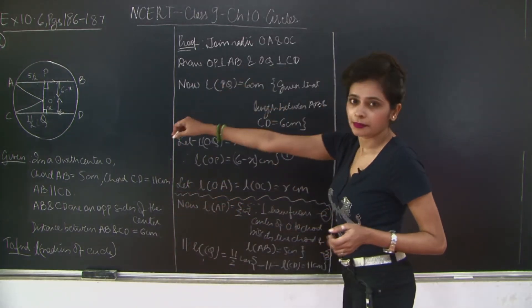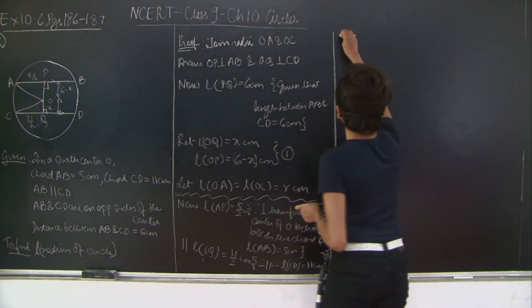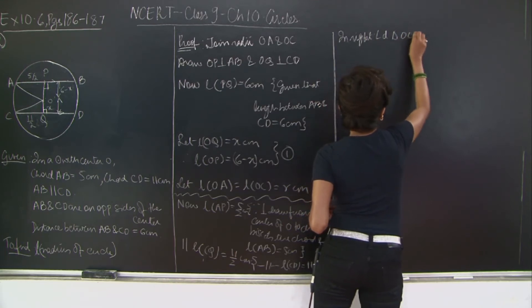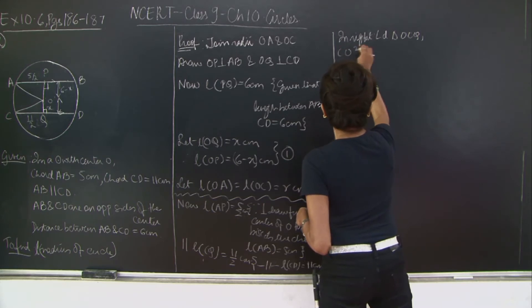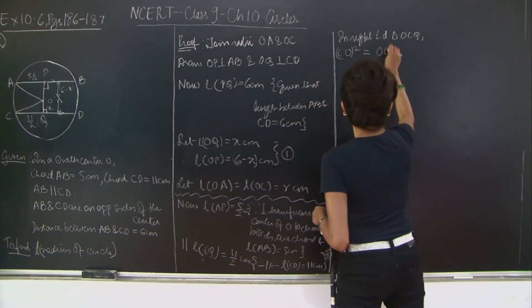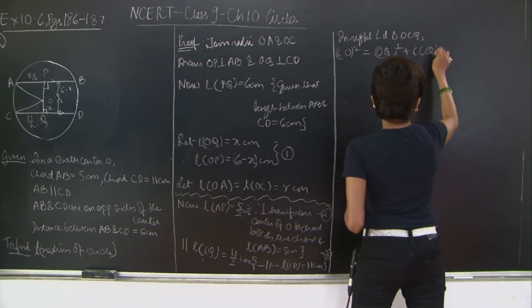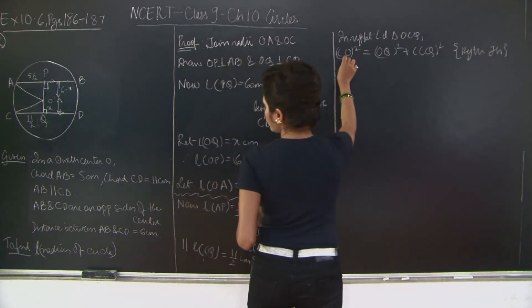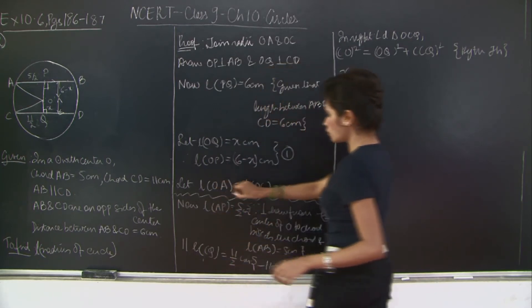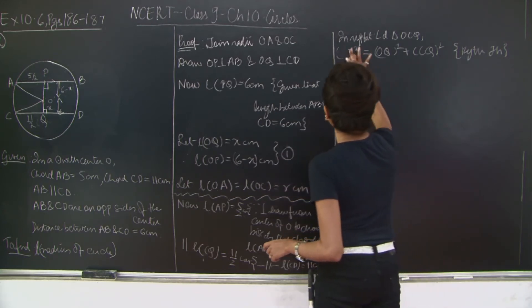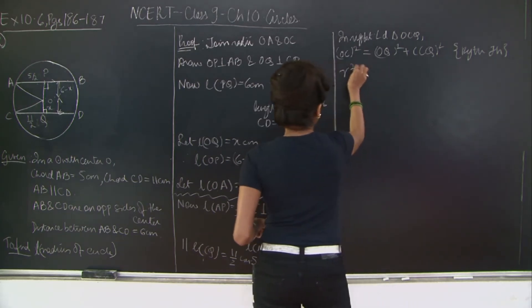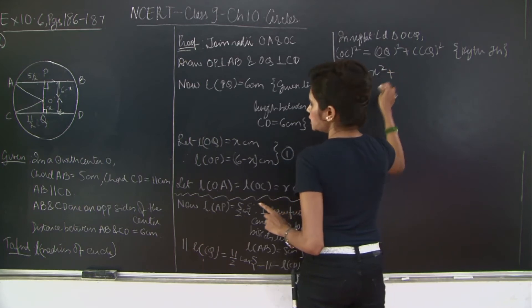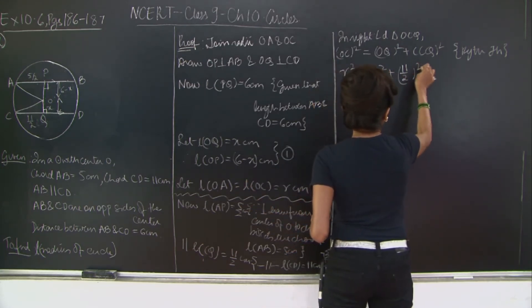In right-angled triangle OCQ, by Pythagoras theorem: OC² = OQ² + CQ². Now OC = R, OQ = X, and CQ = 11/2. So R² = X² + (11/2)².